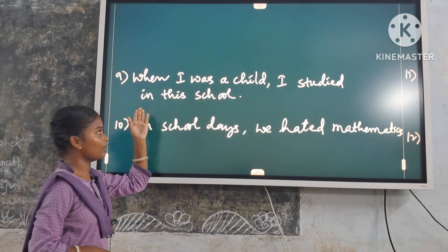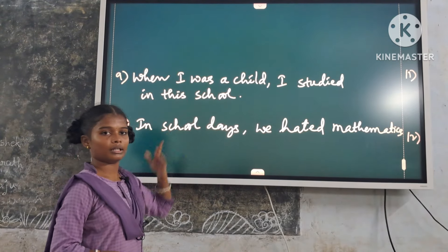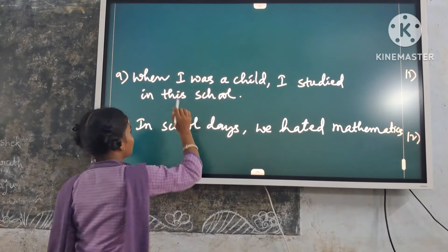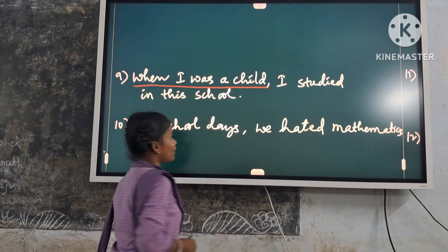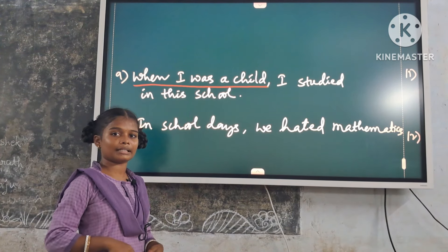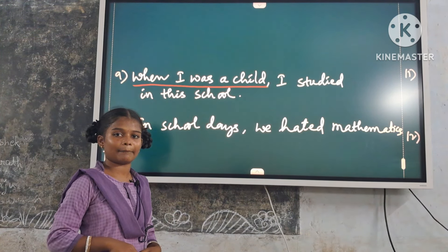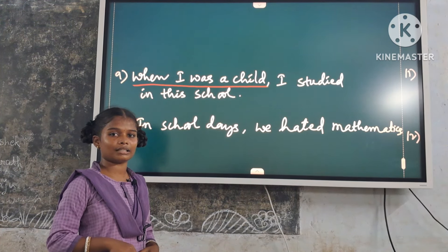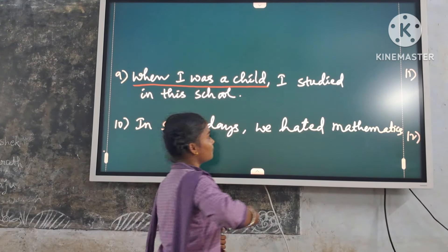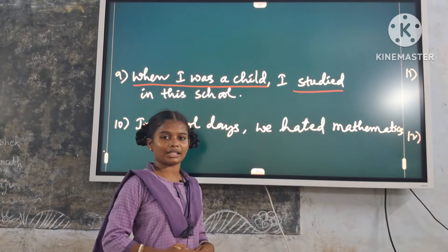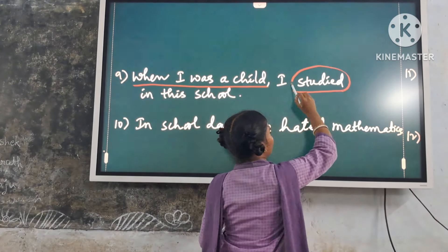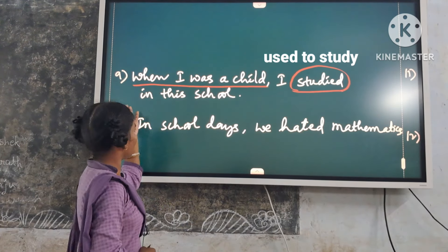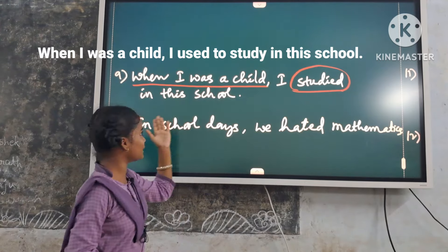Ninth example: 'When I was a child, I studied in this school.' Here, 'when I was a child' is a time expression. It shows a continued past situation, but not a habit. So we use only 'used to'. Replace it with 'used to study'. Answer: 'When I was a child, I used to study in this school.'